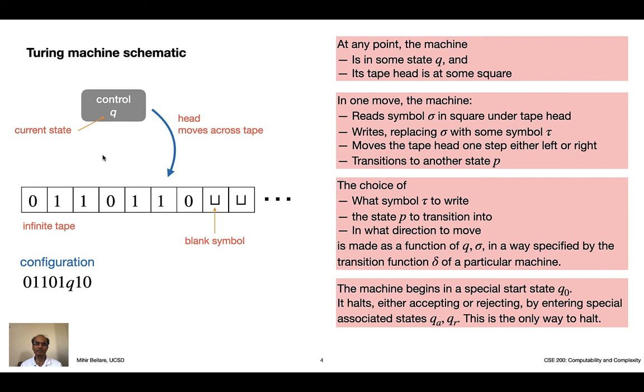So now at any point in time this machine will be in some state q. Its tape head will be scanning some square and now the machine moves in discrete steps. In the next step, which is one move, what it will do is as follows. It will read the symbol under the tape head. So here it would read a 1. Call that symbol sigma. Now it will write. So it will replace the symbol read, in this case a 1, with some symbol of its choice that here we call tau. Once it's done that it will move the tape head. It can only move one step either left or right. In fact it's mandatory to move. It's not even allowed to not move. And finally it will transition to another state. So the control here will go to state p.